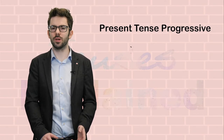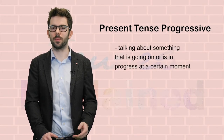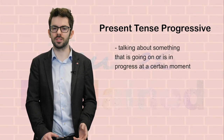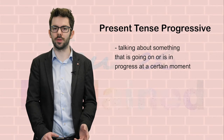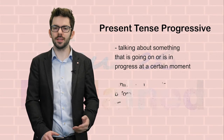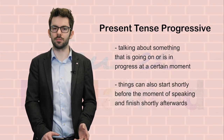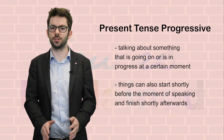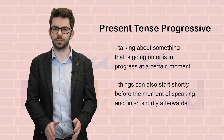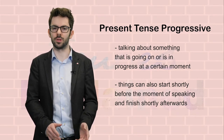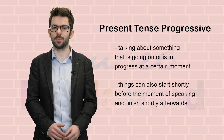We use the present progressive when we are talking about something that is going on or in progress at a certain moment. Things can also be going on at the time of speaking, so they start shortly before and finish shortly afterwards. Let's see how that works in a real life situation.